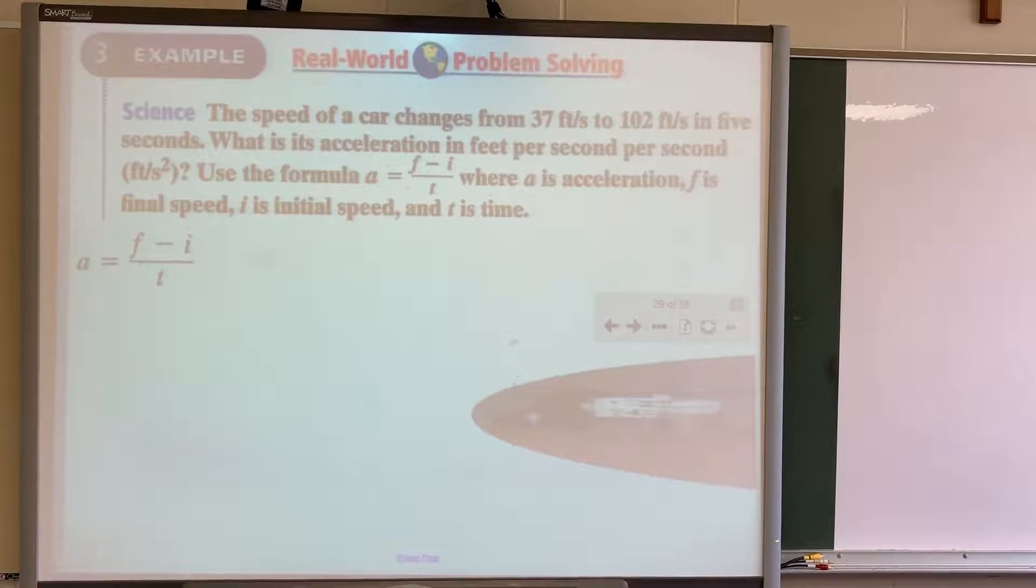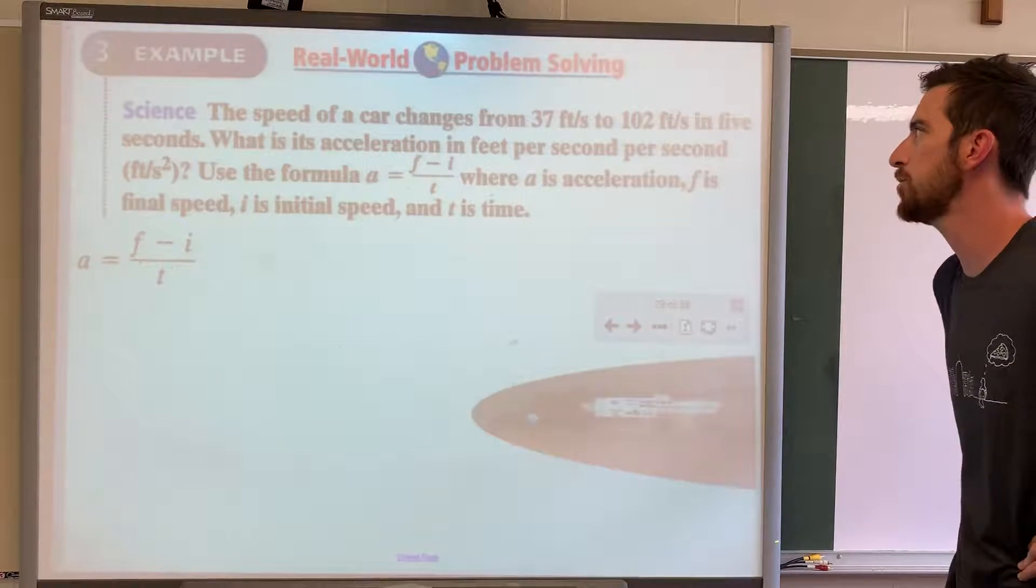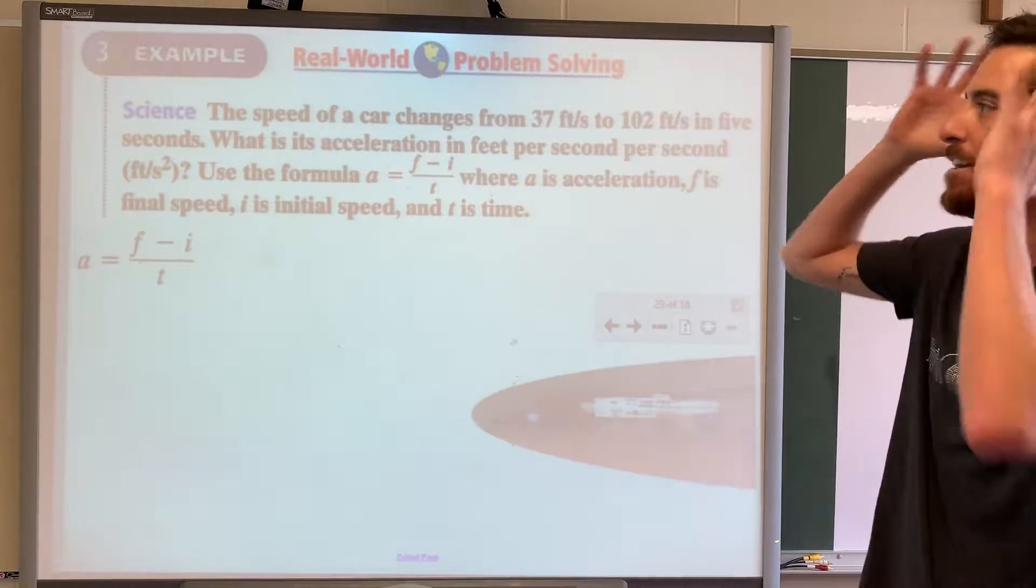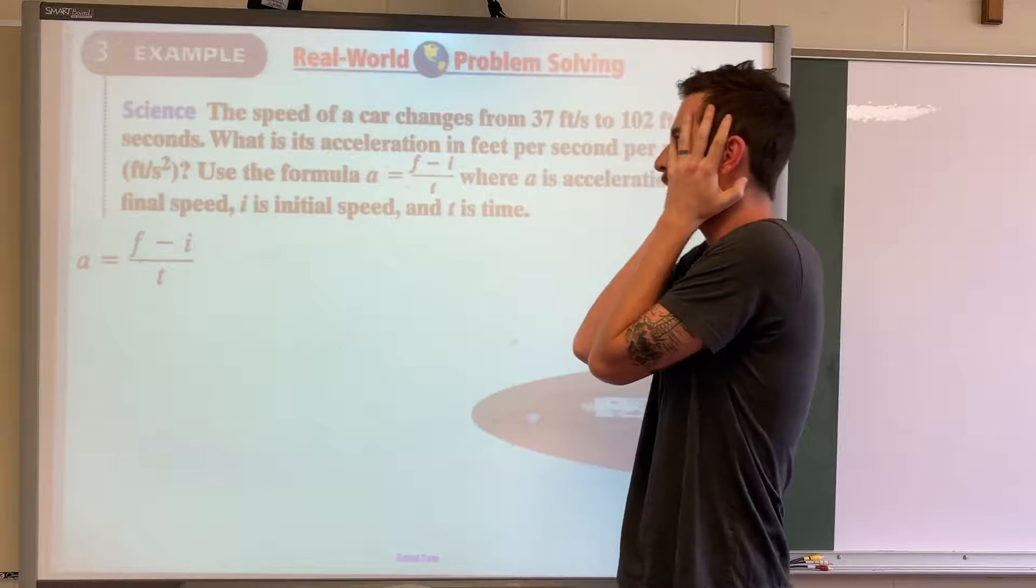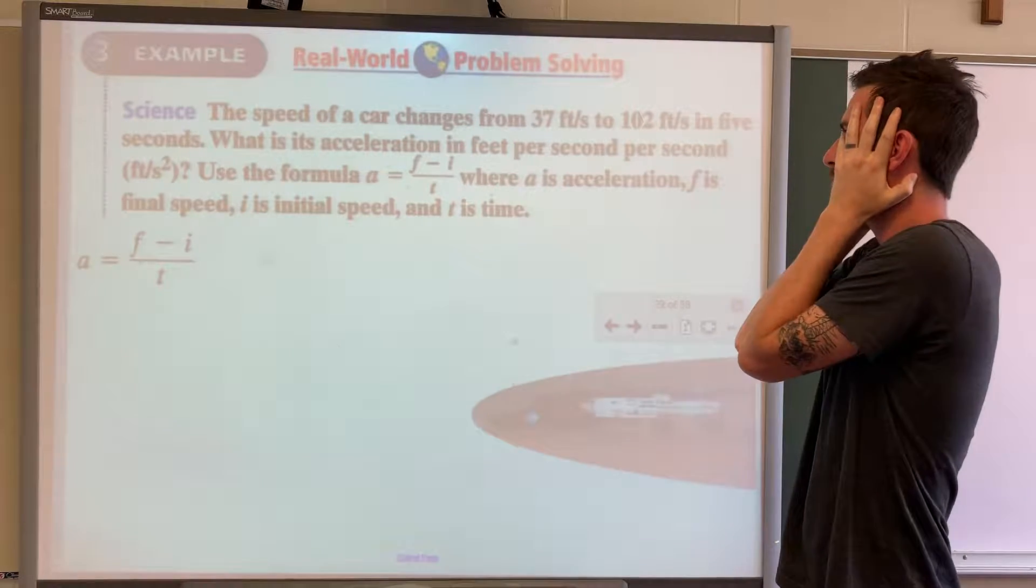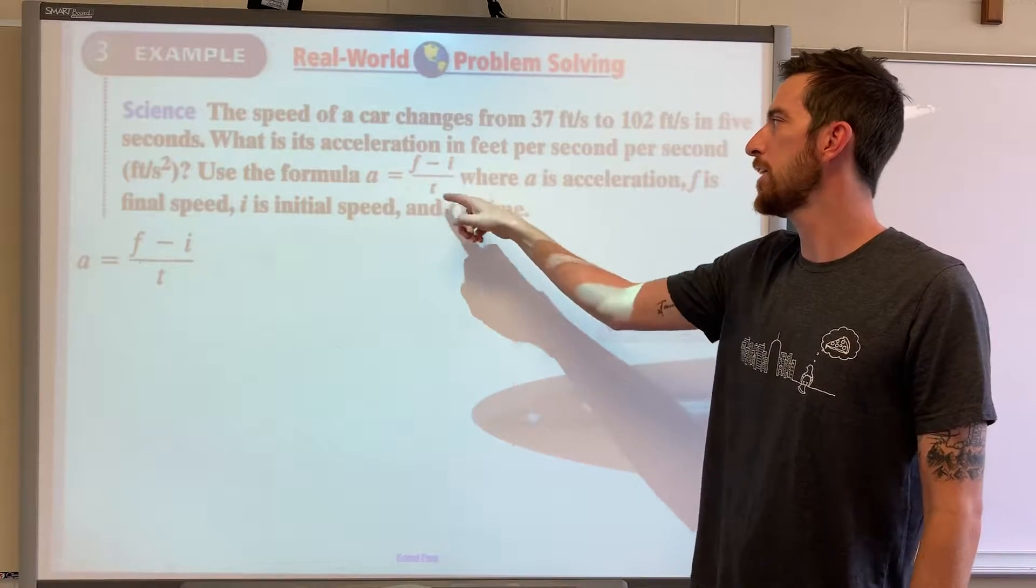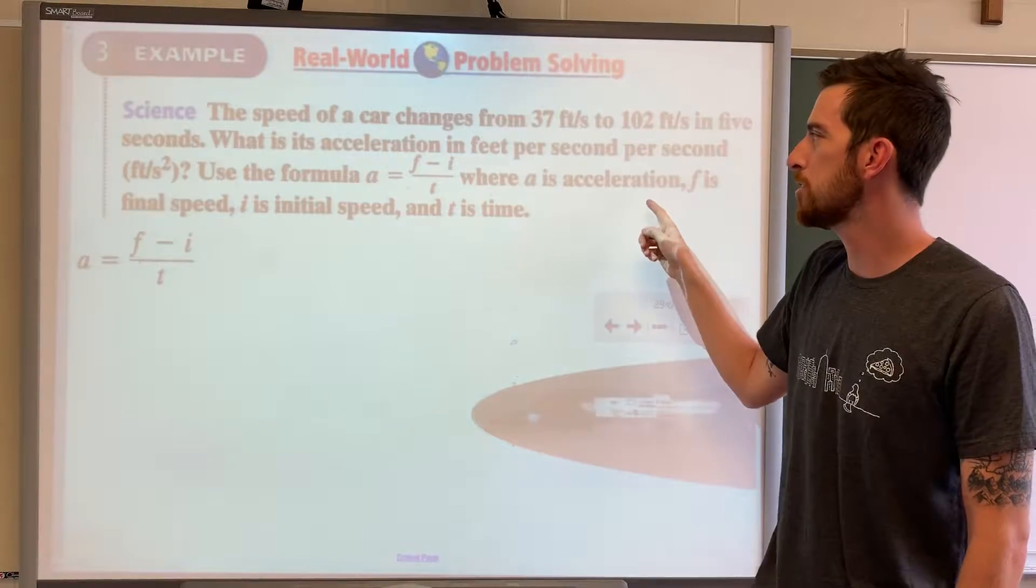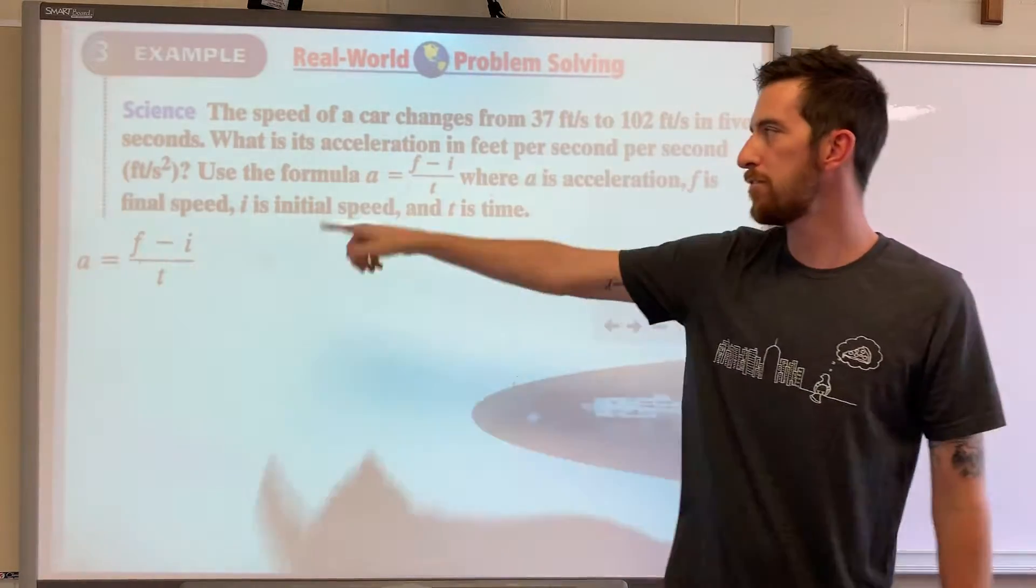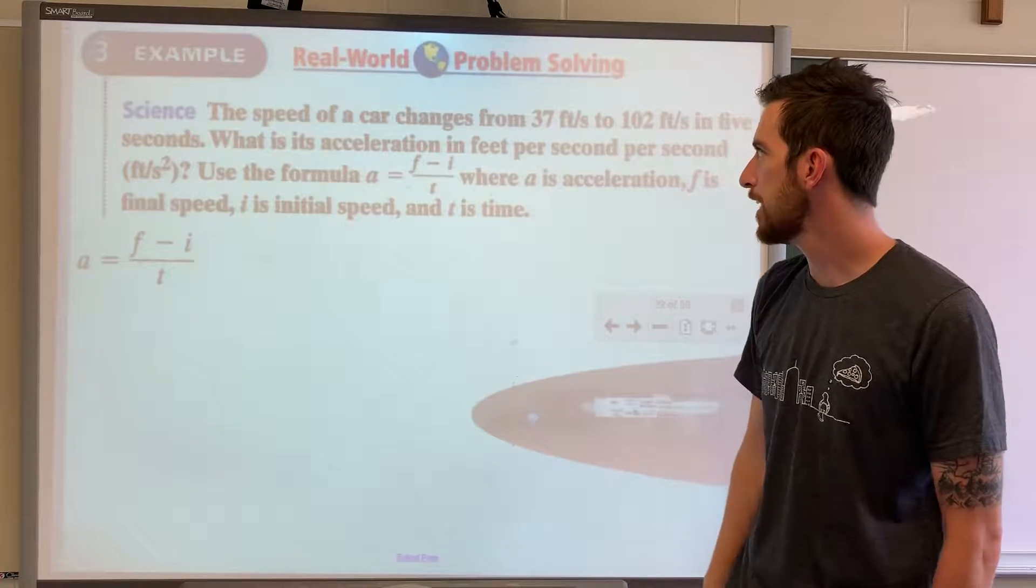All right, acceleration. The speed of a car changes from 37 feet per second to 102 feet per second in five seconds. Oh my gosh, what's its acceleration in feet per second per second? Use the formula A equals F minus I over T, where A is the acceleration, F is the final speed, I is the initial speed, and T is time.